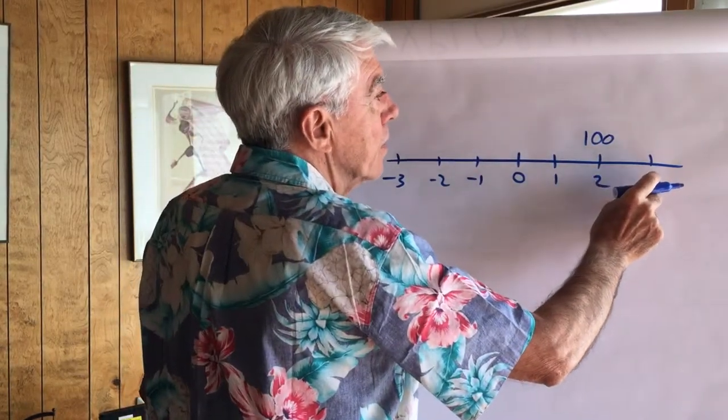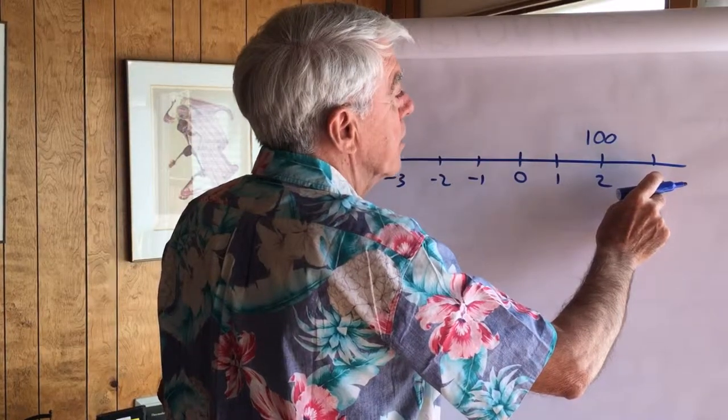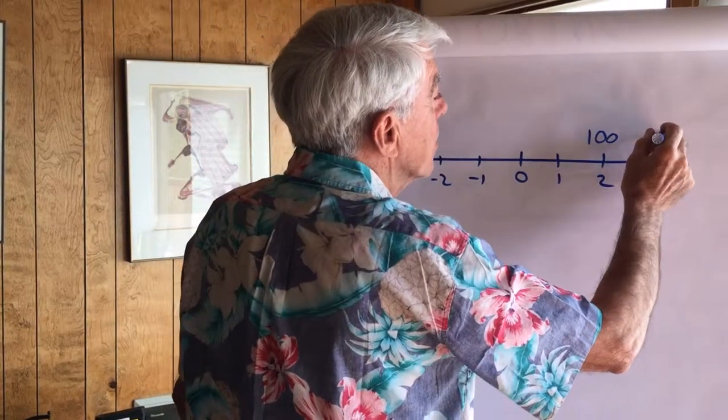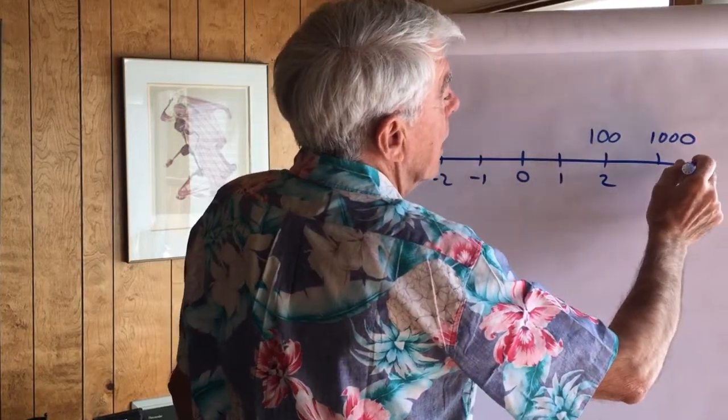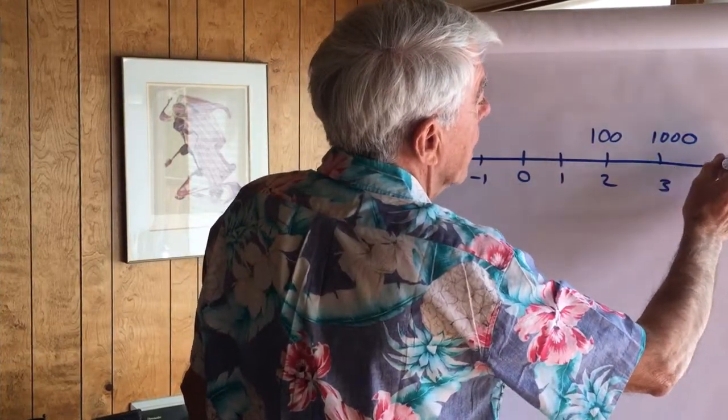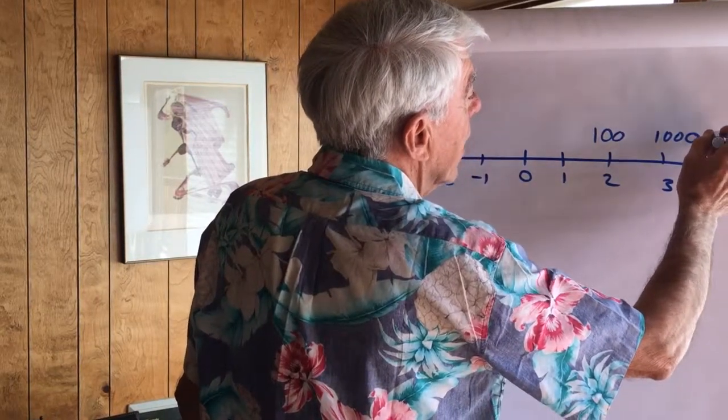Exponent 3, that means 10 cubed. 10 times 10, 100, times 10 again, 1,000. Let's go one more. To the fourth. 10 to the fourth, 10,000. All right.